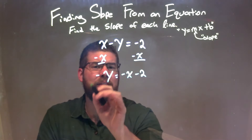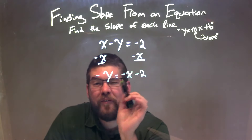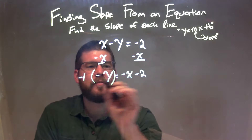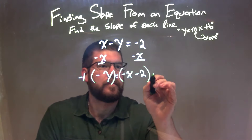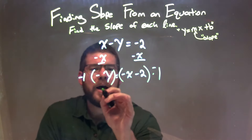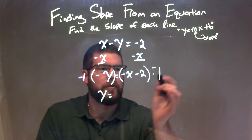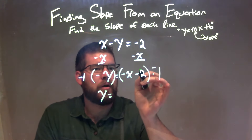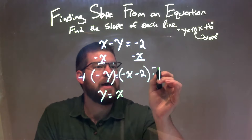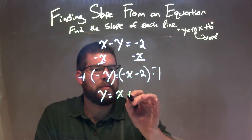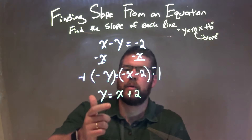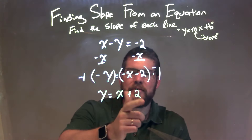So now I need to get rid of that negative, because y is not officially isolated. So to do that, I'm going to multiply both sides by negative 1. When I multiply both sides by negative 1, I'll get y by itself on the left, which is what I'm looking for. Now let's distribute that negative 1 across to both parts. Negative 1 times negative x is a positive x, and minus 2 times negative 1 is the same thing as plus 2. So now we have our slope-intercept form: y equals x plus 2.